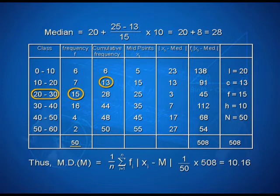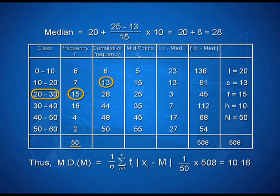Using the formula for mean deviation about median, we have (1/n) into summation i ranging from 1 to n of f_i into |x_i minus m|. Substituting the values, we get (1/50) into 508, that is 10.16. Therefore, the mean deviation about median is 10.16.